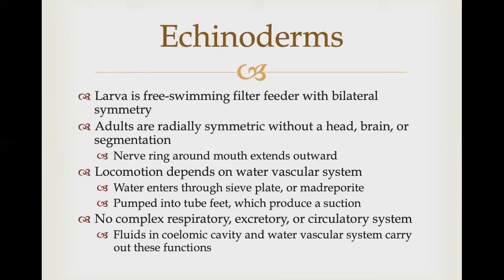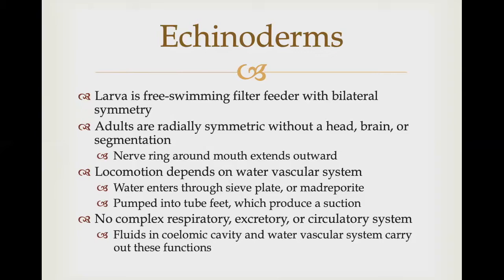Sea stars cause extensive economic loss because they consume oysters and clams before they can be harvested. However, they are important in many ecosystems — fish and sea otters eat echinoderms, and scientists favor echinoderms for embryological research.